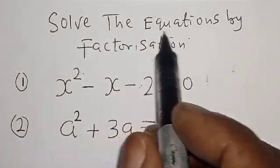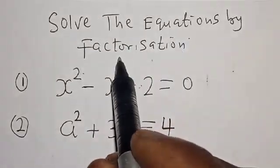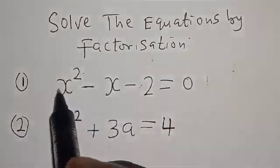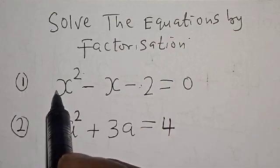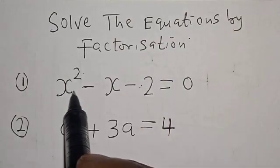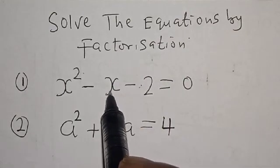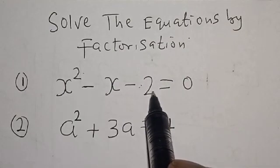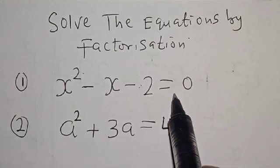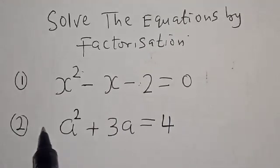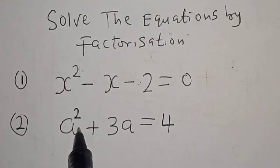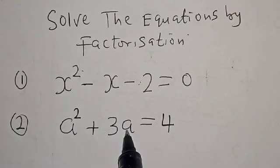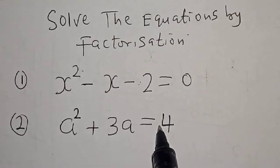Solve the equations by factorization. Number one: x squared minus x minus 2 is equal to zero. The second one is a squared plus 3a is equal to 4.